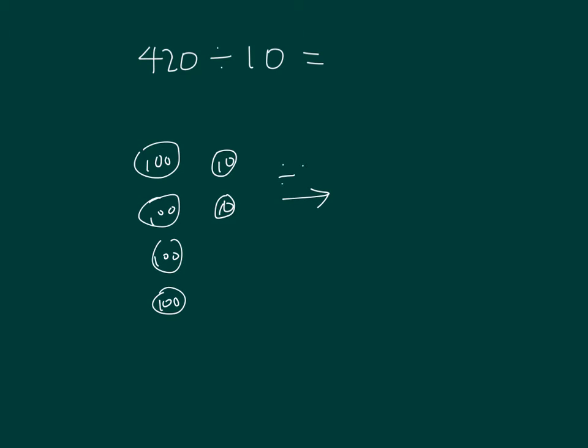When we divide by 10, when we take 100 and divide by 10, we get 10. So there's one 10, two 10s, three 10s, four 10s. When we take a 10 and divide it by 10, we get 1.